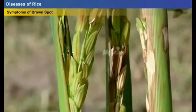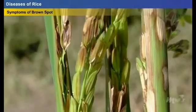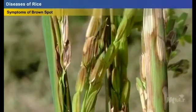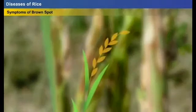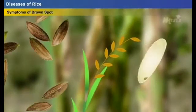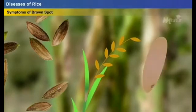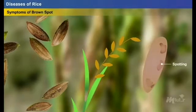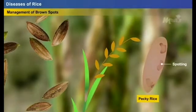Dark brown to black oval spots are visible on infected glumes and panicles. When the florets are infected, grain quality decreases due to incomplete grain filling. The fungi may also penetrate into the grains, causing spotting and discoloration of grains — a condition referred to as pecky rice.